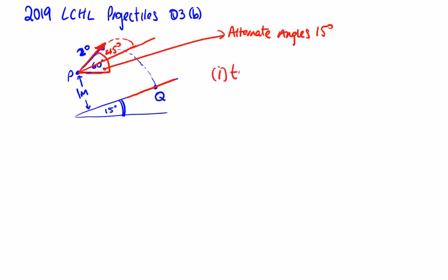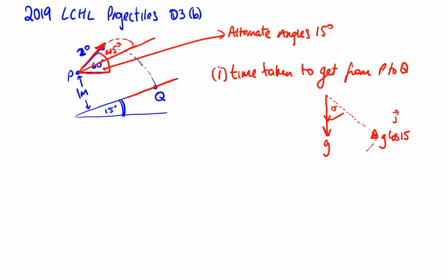We start these incline questions by getting our acceleration. So this is G coming in this way. This angle will be 15. We're going to have G cos 15, and that's going to be in the J direction. And in the I direction we will have G sin 15.